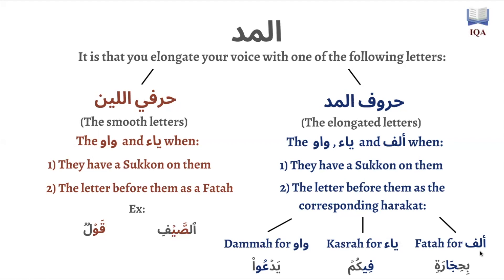So those are what huruf al-mad are: the waaw, the ya, and the alif, when they have a sukun on them and the letter coming before it has the corresponding haraka — a dhamma for the waaw, a kasra for the ya, and a fatha for the alif. When this happens, you elongate the respective vowel sound.